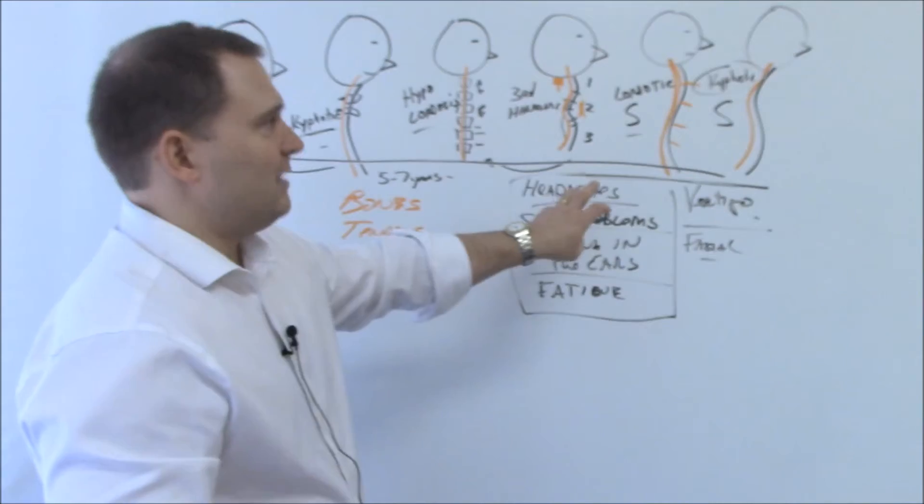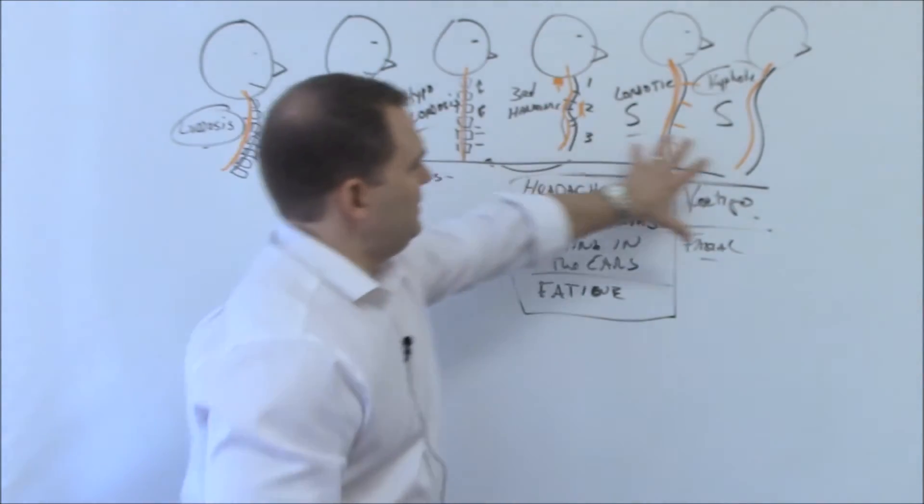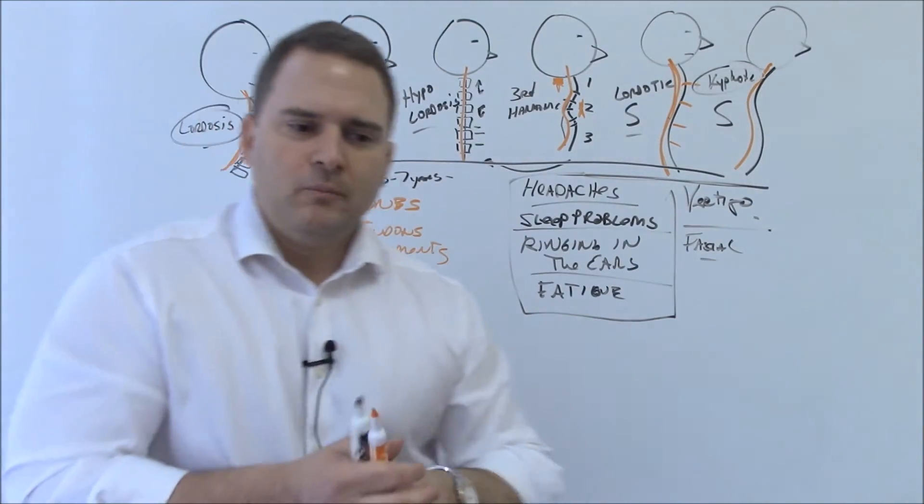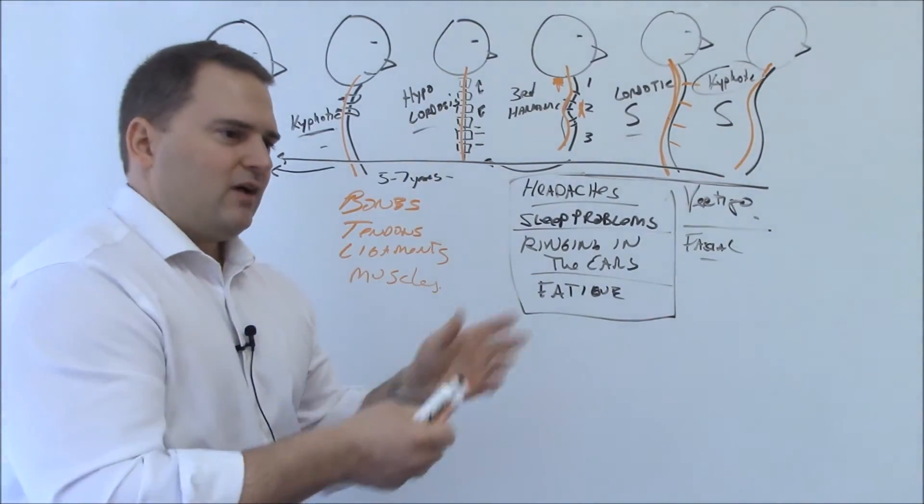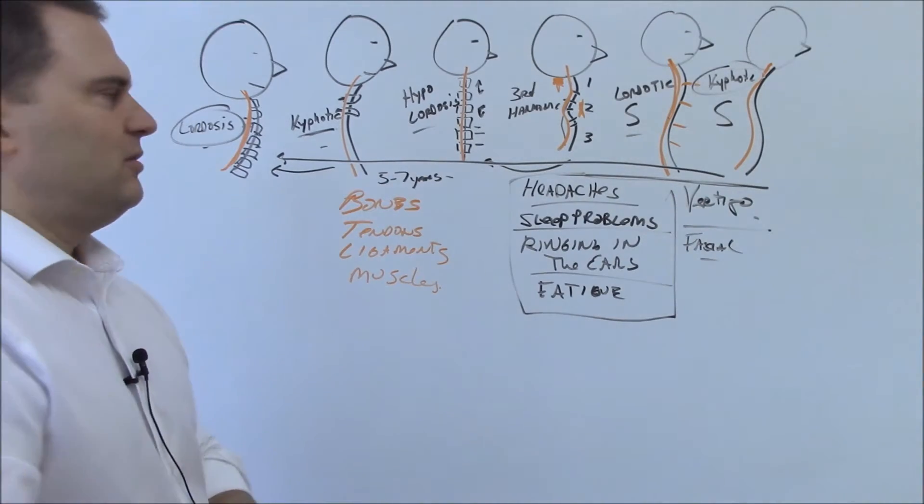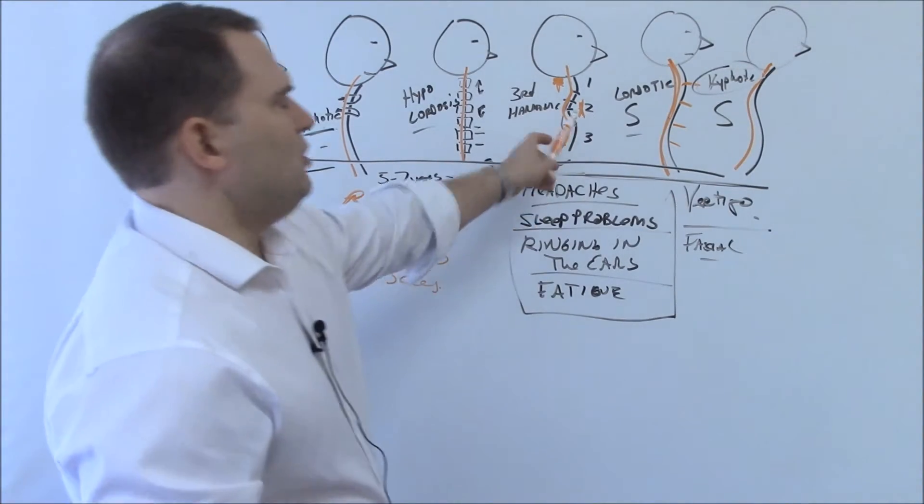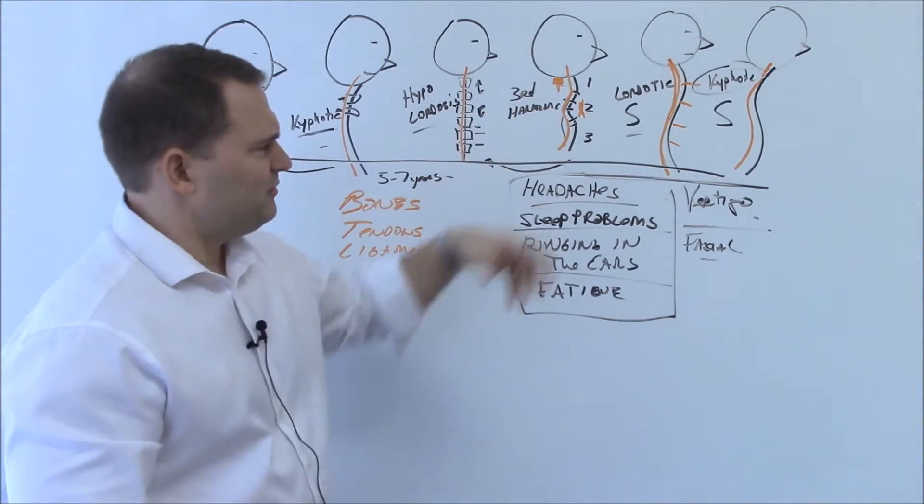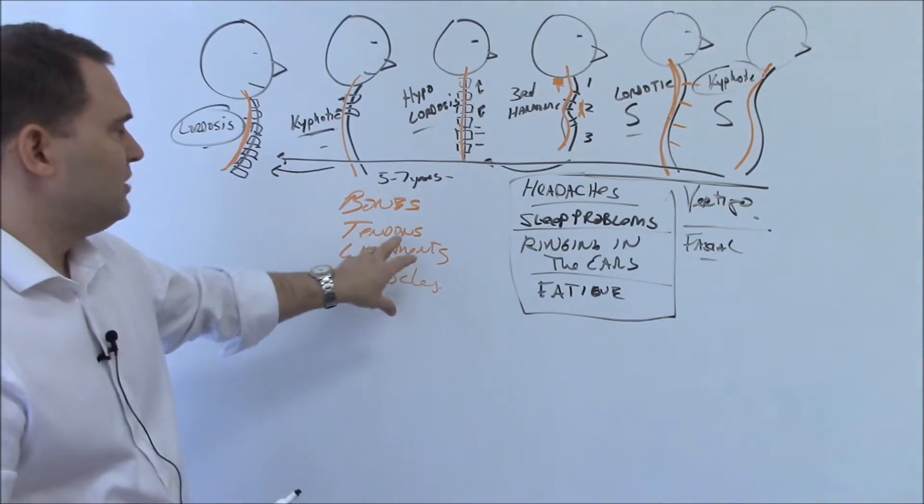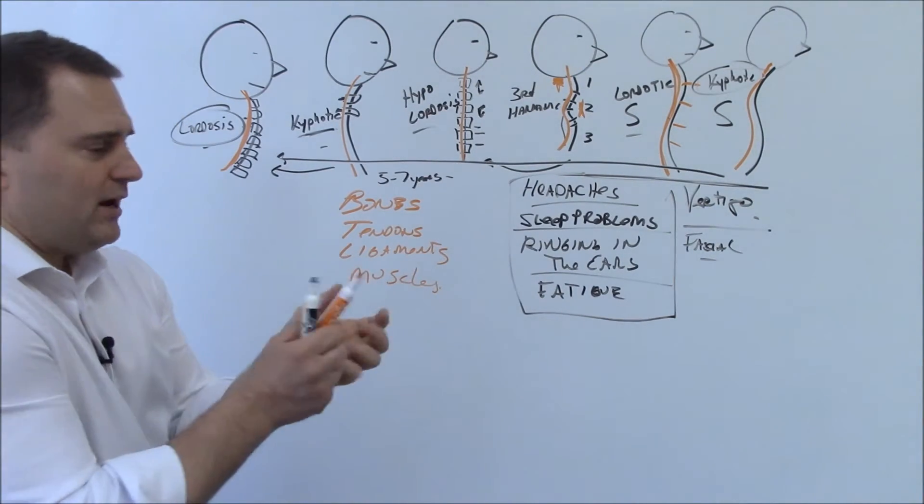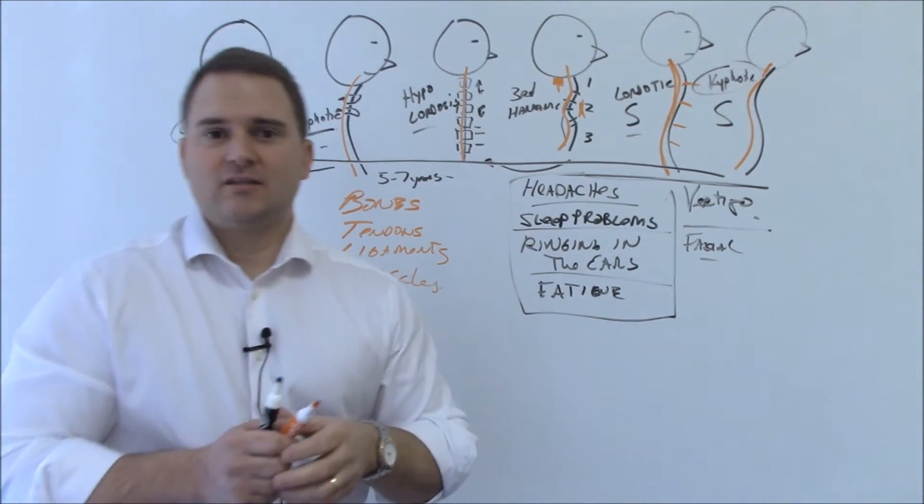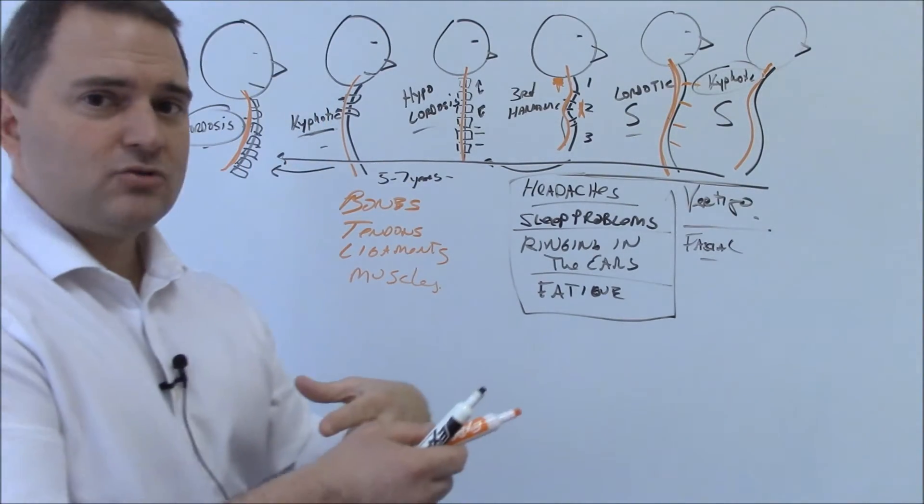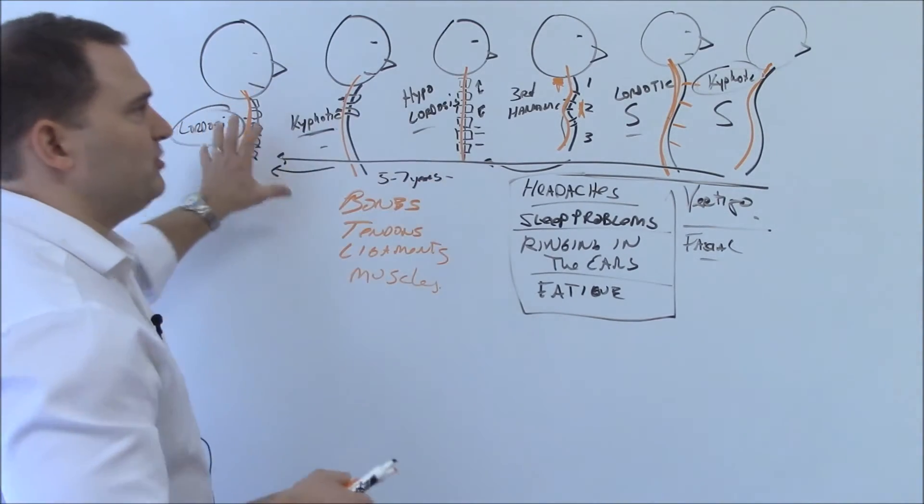It could take a significant amount of time, if you're in one of these, to get back to a more normal function. A lot of times people say that guy said he was going to fix me in two or three visits. Nonsense. There's no way. You're not going to turn this into this in a few visits, especially if it's firmly entrenched. If all the muscles, tissues, ligaments, tendons are trained to do that, it's going to take significant time to detrain and then retrain that body to accept the proper position.